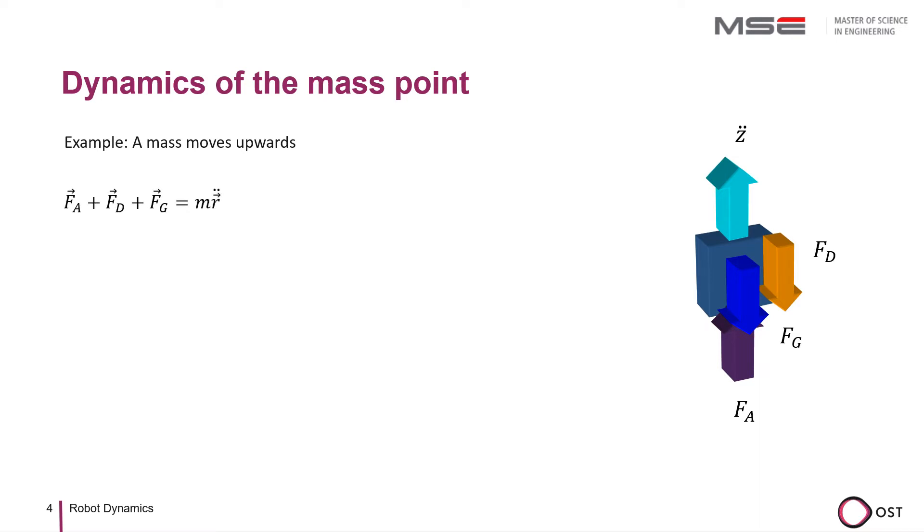Let's put that into our equation of motion. We consider the driving force to be positive if it is pointed in the z direction. If we assume that the friction is Coulomb friction, the amount is constant and acts in the opposite direction of the sign of the movement, which we take into account with the signum function. However, this only applies to non-zero velocities. The gravitational force is m times g and in the negative z direction.